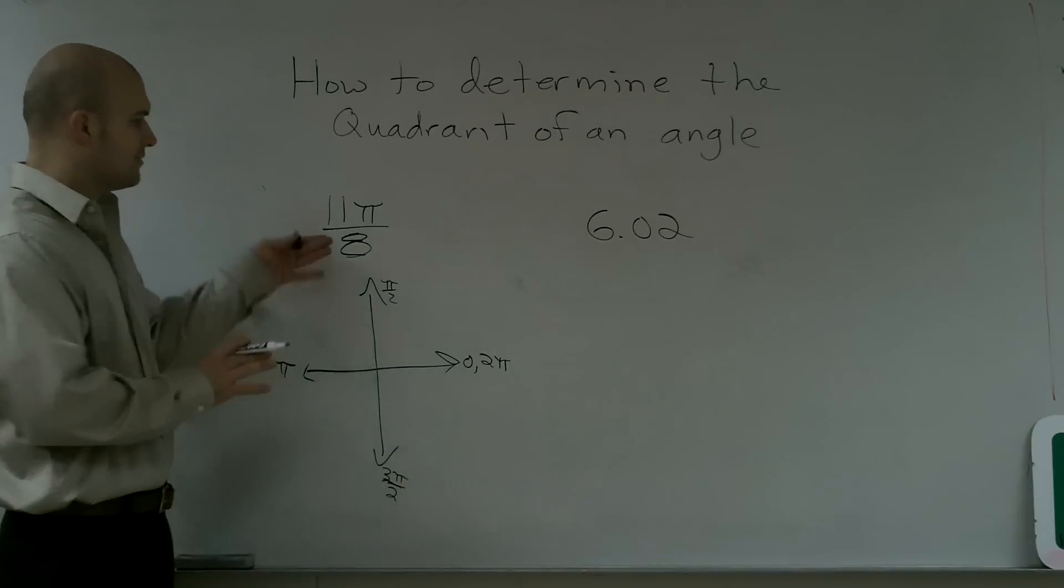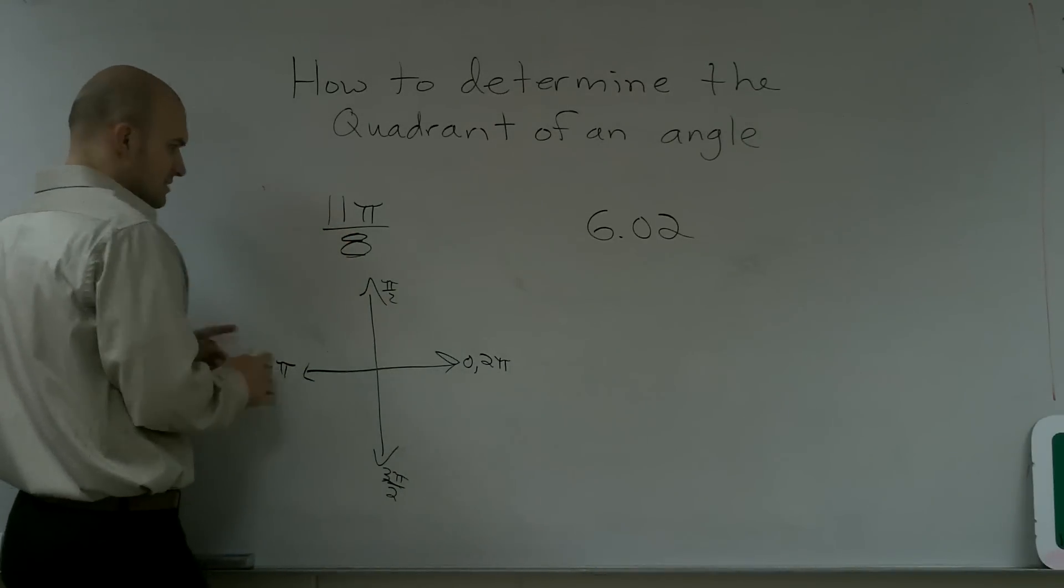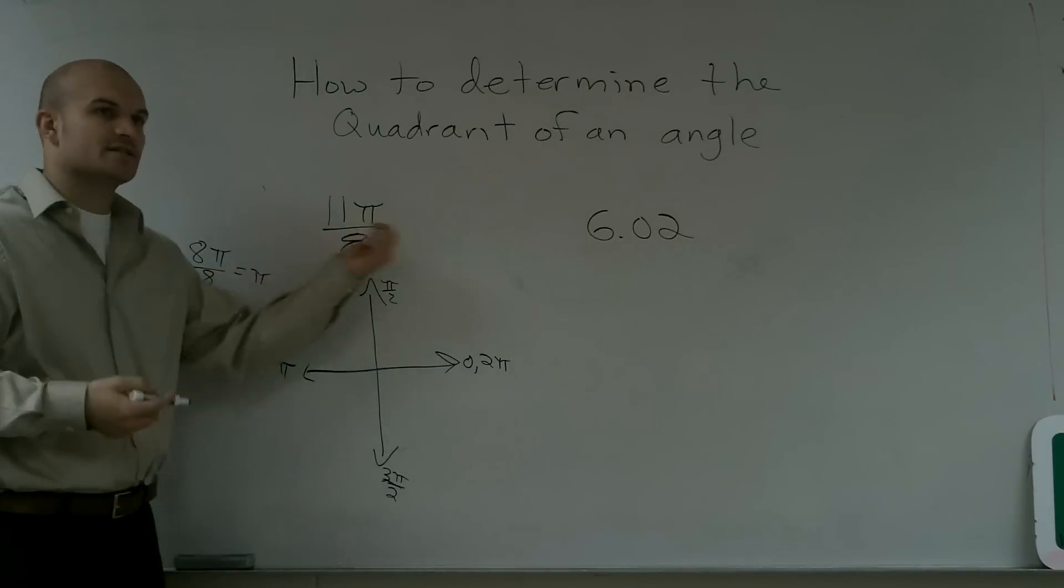Now, the easiest way to relate this is I'm going to want to simplify my fraction so I can get it equal to 8. So if I notice, if I had 8π over 8, that's the same thing as π because 8 over 8 is 1. So it doesn't matter what your denominator is.